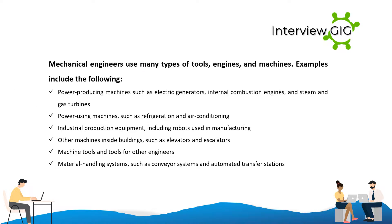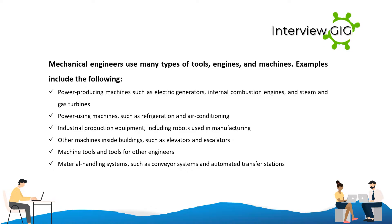Mechanical engineers use many types of tools, engines, and machines. Examples include power producing machines such as electric generators, internal combustion engines, and steam and gas turbines; power using machines such as refrigeration and air conditioning; industrial production equipment including robots used in manufacturing; other machines inside buildings such as elevators and escalators; machine tools; and material handling systems such as conveyor systems and automated transfer stations.